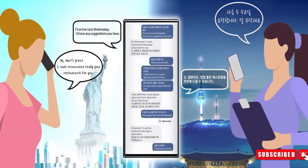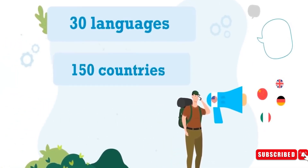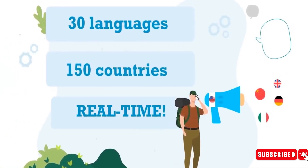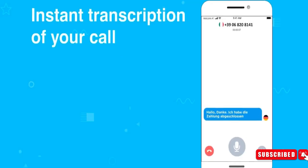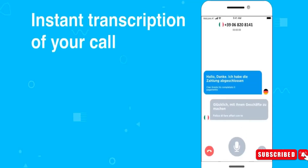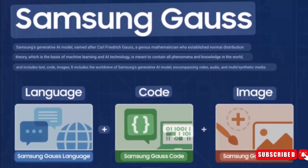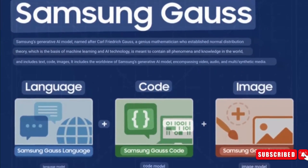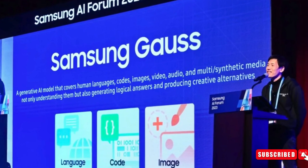One UI 6.1 can also live-translate voice calls from one language to another for both persons on the call. This feature was already announced by Samsung a few weeks ago as the first feature powered by Samsung Gauss, the company's first in-house large language foundational model.